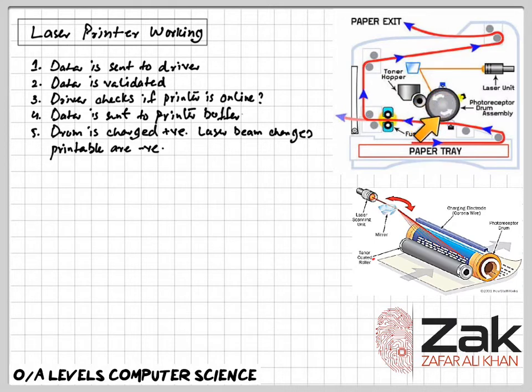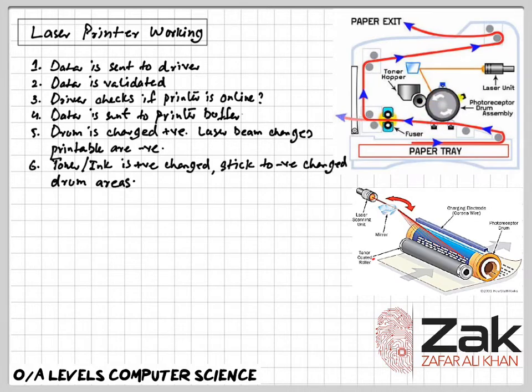The circumference of this drum is equal to the size of the page. The drum is coated with positively charged toner. Toner is powdered ink. Since the toner is positively charged, it only sticks to the negatively charged parts of the drum. This is the toner spreading drum.